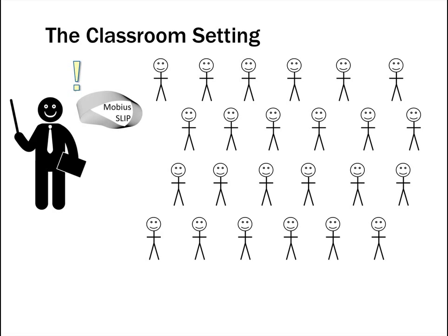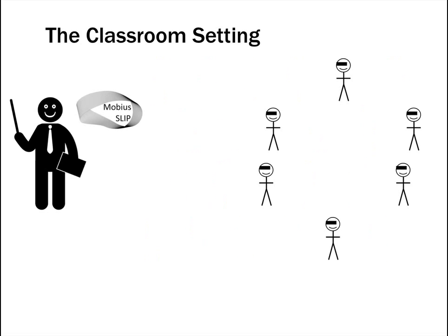The Mobius SLIP is an easy-to-use solution that creates value for both the students and the instructors. The class is randomly and automatically divided into groups — let's say about six people in each group. The system conceals the students' identities so that feedback and scoring are anonymous. This helps to ensure objectivity and reduce potential biases in the reviews.